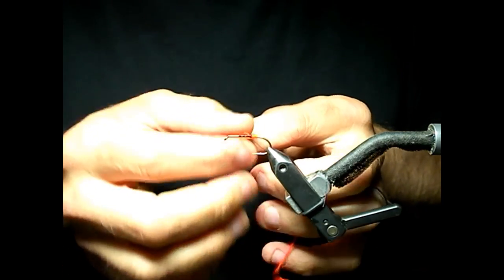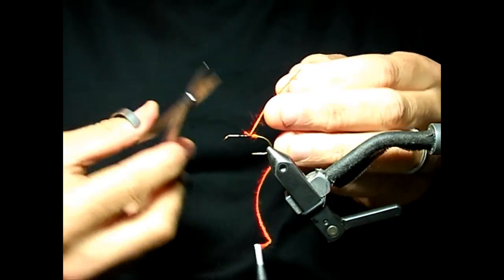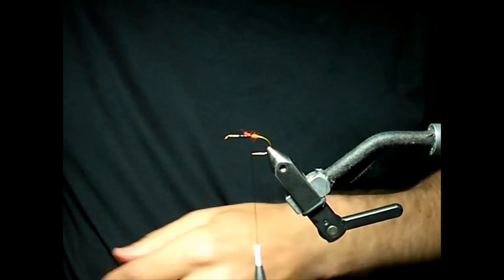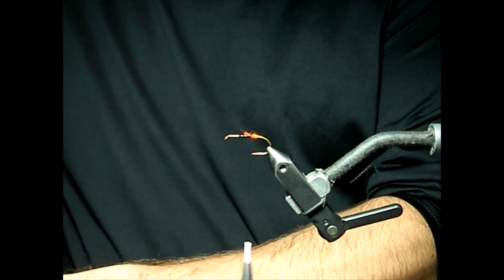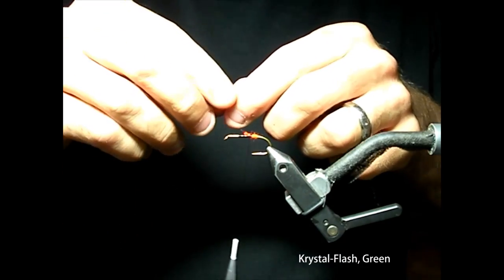Swing your bobbin holder out of the way, tie your thread off and clip. You're going to use about ten individual strands of green crystal flash for this fly.